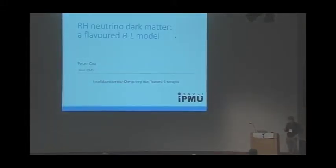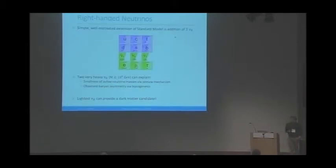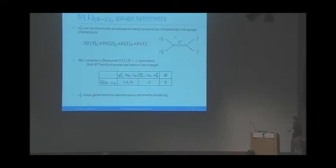I'd like to tell you about work we've been doing on right-handed neutrino dark matter. Perhaps one of the simplest and yet well-motivated extensions to the standard model is to add three right-handed neutrinos. This completes the picture of fermions in the standard model and puts neutrinos on the same footing as other fermions. You add three standard model singlets and can explain the smallness of neutrino masses by the seesaw mechanism and generate the observed baryon asymmetry through leptogenesis. Your lightest right-handed neutrino could be a dark matter candidate.